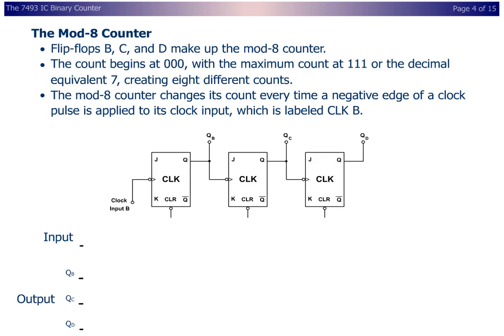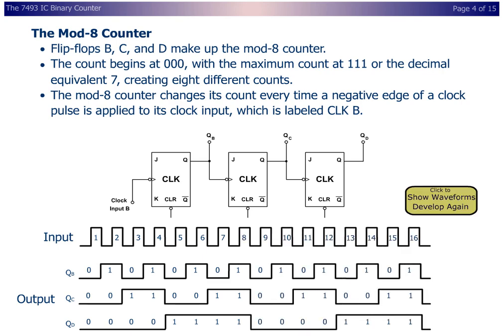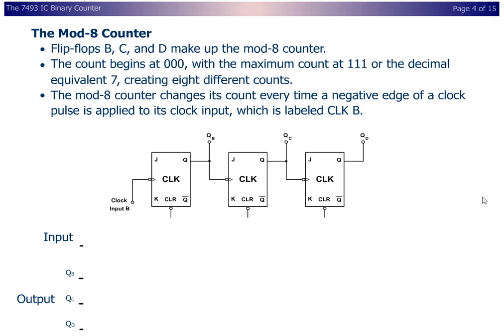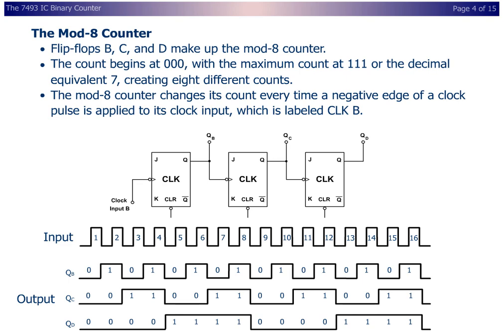The mod-8 counter. Flip-flops B, C, and D make up the mod-8 counter. The count begins at 0-0-0 with the maximum count at 1-1-1, or the decimal equivalent 7, creating 8 different counts. The mod-8 counter changes its count every time a negative edge of a clock pulse is applied to its clock input, which is labeled CLK-B.